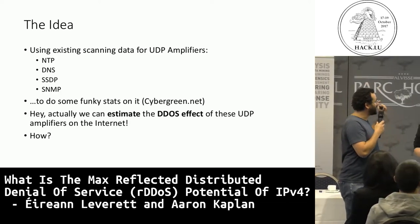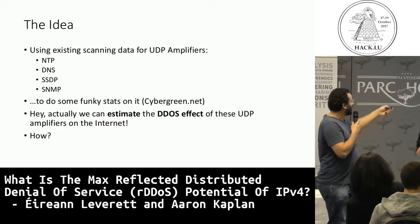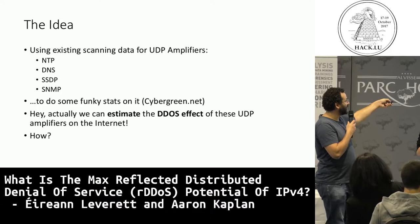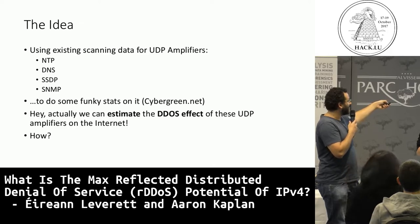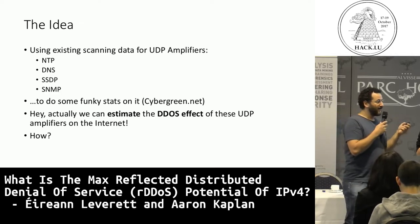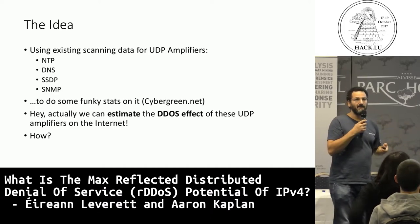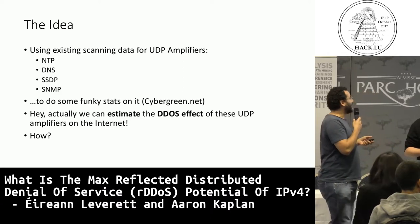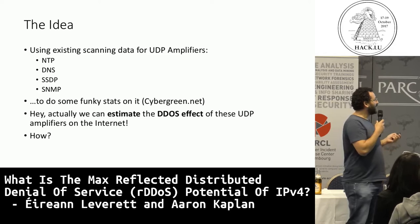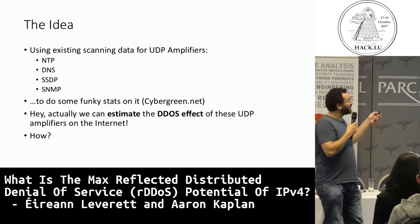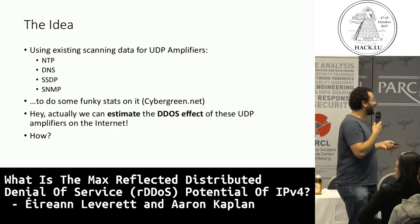The first caveat is we took existing scanning data of four protocols: UDP amplifier protocols - NTP, DNS, SSDP, and SNMP. I worked with JPCert on a project called CyberGreen on this, doing stats to visualize it and make it understandable for policy makers. Then we met and came up with the idea that based on counts of these UDP amplifiers, we could estimate the reflective volumetric DDoS power of the internet.